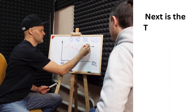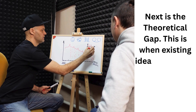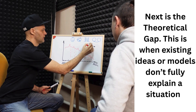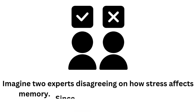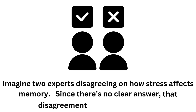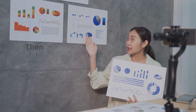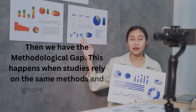Next is the theoretical gap. This is when existing ideas or models don't fully explain a situation. Imagine two experts disagreeing on how stress affects memory. Since there's no clear answer, that disagreement is a theoretical gap.